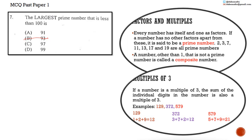97: 9 plus 7 is equal to 16. 16 is not a multiple of 3. 99: 9 plus 9 is equal to 18. 18 is a multiple of 3, so we cross 99 out. So the answer is either 91 or 97.